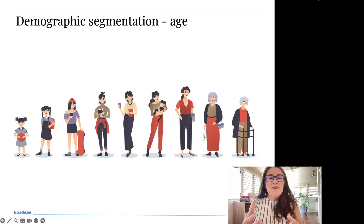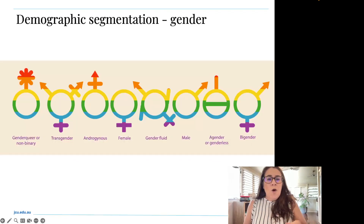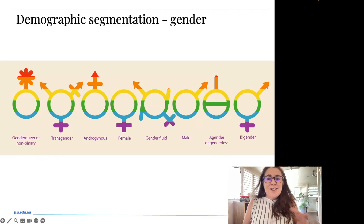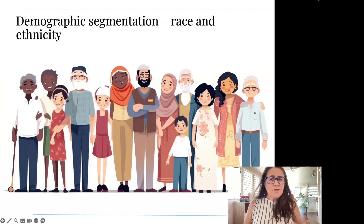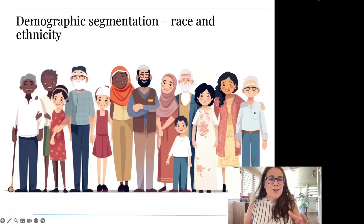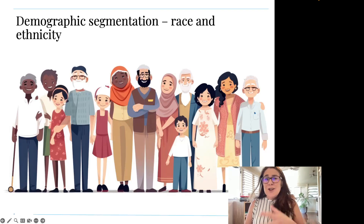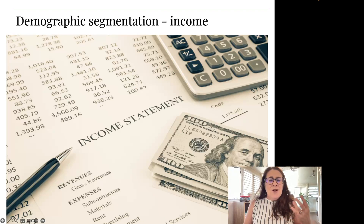One way we can segment our market is by looking at the age demographic. Marketers also consider gender, because different genders have different needs, wants, desires and likes, so we quite often use gender to further segment the market. We'll also consider race and ethnicity, especially in areas such as food, music, clothing, cosmetics and services like banking and insurance.